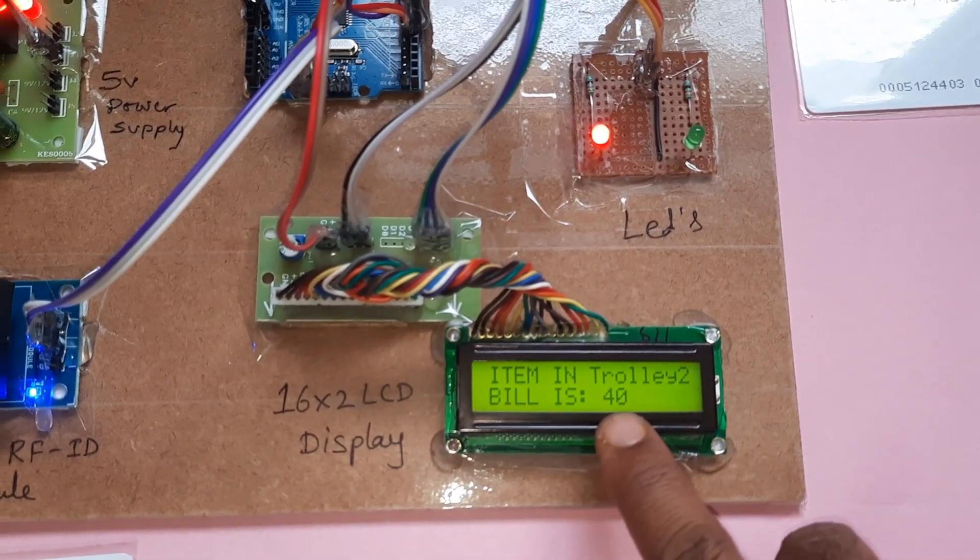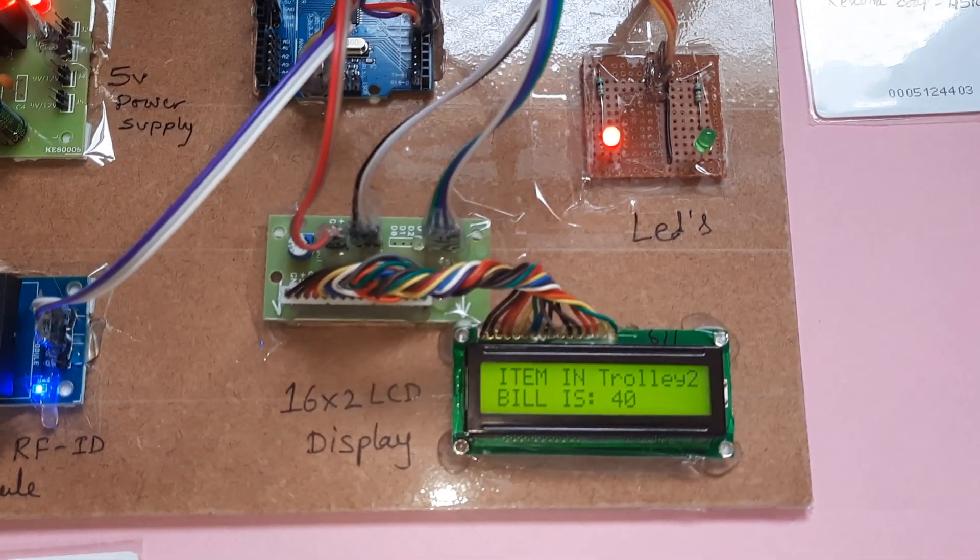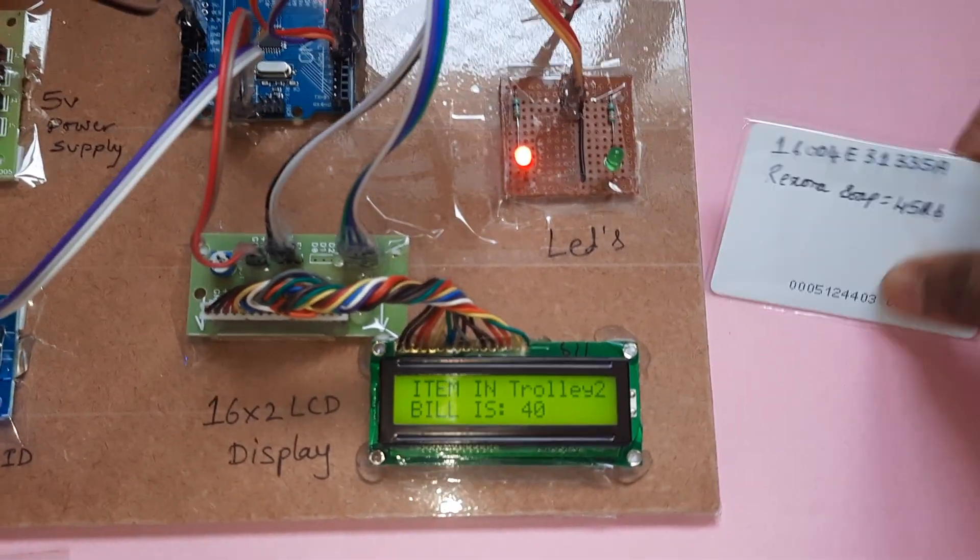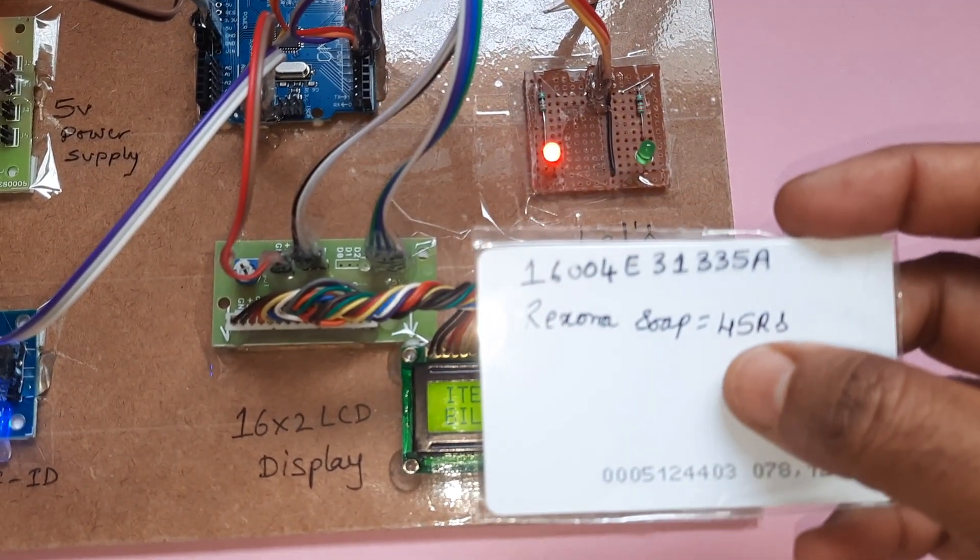Two items added, cost is 40 rupees, 25 plus 15. Rexona soap, it costs 45 rupees.